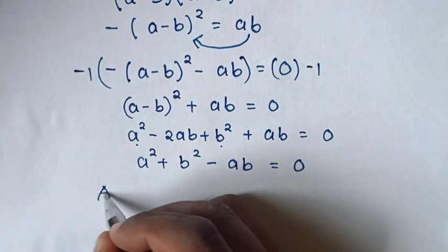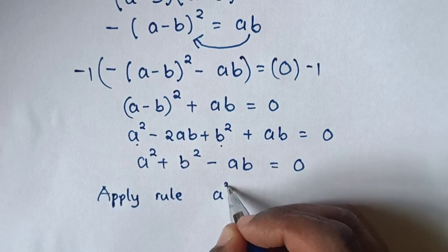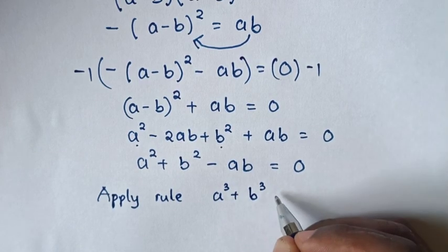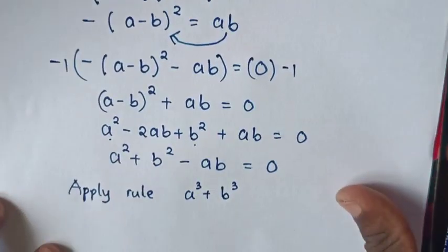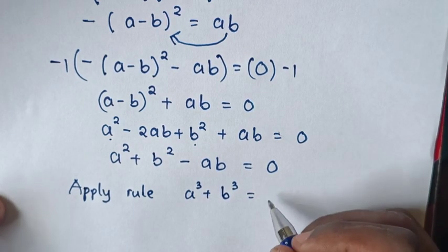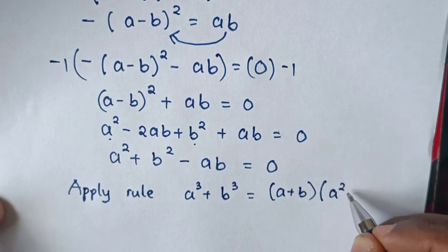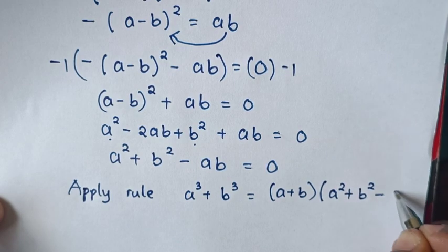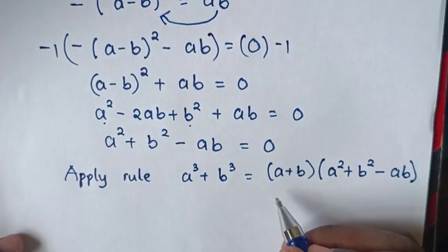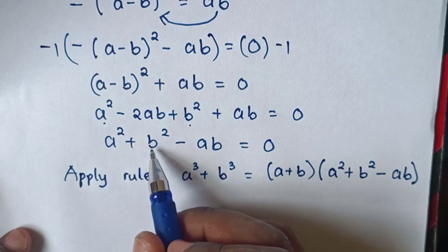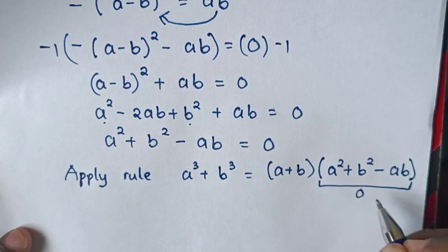In the next step, we are going to apply the rule for a³ plus b³, which is what we are asked in the problem. From the rule, a³ plus b³ is equal to a plus b bracket times a squared plus b squared minus ab. And from our working, a squared plus b squared minus ab is equal to 0.